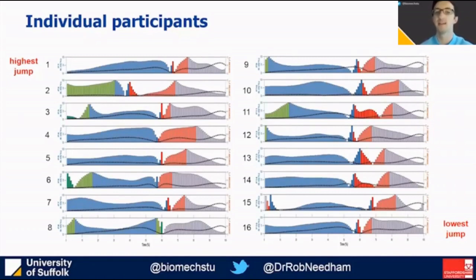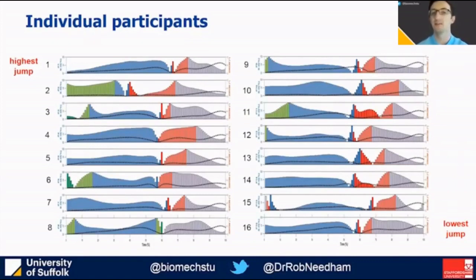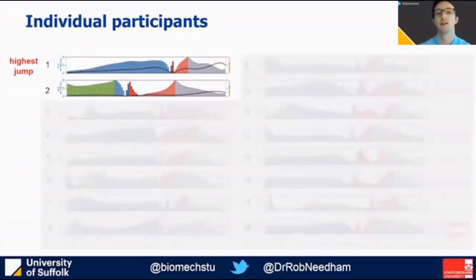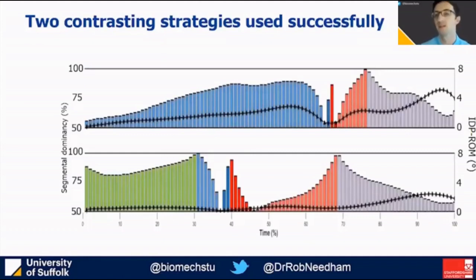To focus on differences, one of the main things that stands out is at movement initiation, where some individuals have a blue antiphase initiation and other individuals have a green in-phase initiation. Both strategies were used successfully within the cohort, for example by our two highest jumpers. I'll dig into these representative examples in a bit more detail.